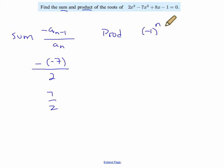And the product is given by negative 1 to the n power times a_0, the constant, all over a_n. So this is going to be negative 1 cubed, because it's a cubic, and all we need to know there is that's going to be negative times a_0, which is another negative 1, all over the first term, which is 2. And so a negative times a negative is a positive.